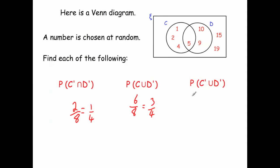P(C' ∪ D'): the probability of not C or not D. Not C includes: the two outside numbers, ten, nine, fifteen, nineteen. Not D includes fifteen and nineteen, plus one, two, and four. Together, any number that satisfies either condition is accepted. That gives 7 numbers out of 8, so the probability is 7/8.